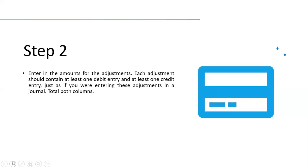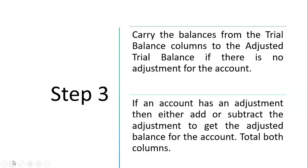In step two, dealing with the adjustments, we still have to total both the debit and credit columns. In step three, we carry the balances from the trial balance columns to the adjusted trial balance.